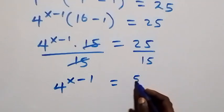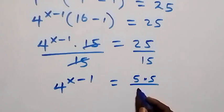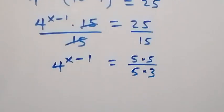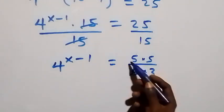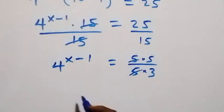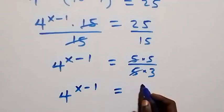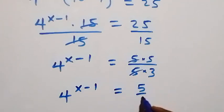25 over 15 can be written as 5 times 5 over 5 times 3, which simplifies to 5 over 3. So four raised to power x minus one equals to 5 over 3.